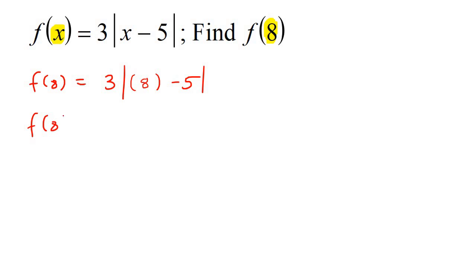Now that will become 3. And then on the inside of this absolute value, you're going to have 8 minus 5, which is 3. Now, what is the absolute value of 3? Well, that is just 3. And then 3 times 3 is 9.